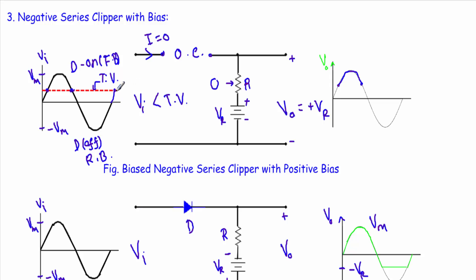So the output voltage, as long as the input voltage is less than the transition voltage, will be exactly equal to our positive reference voltage Vr. That means from this point to this point and from this point towards the left, our output voltage will be equal to plus Vr. This is the complete output voltage waveform for the negative series clipper with positive bias.